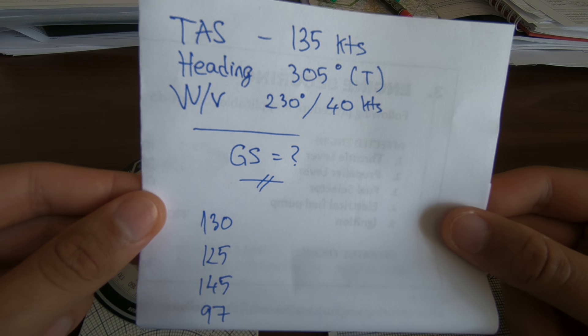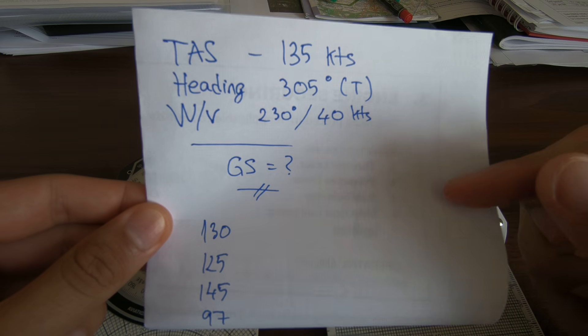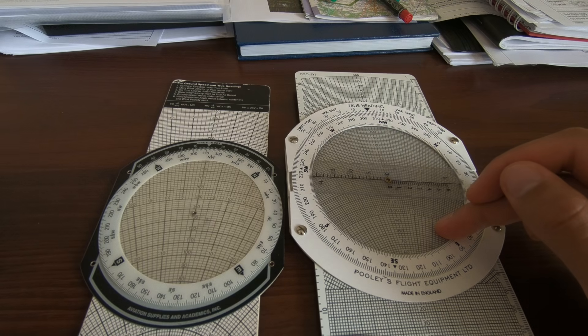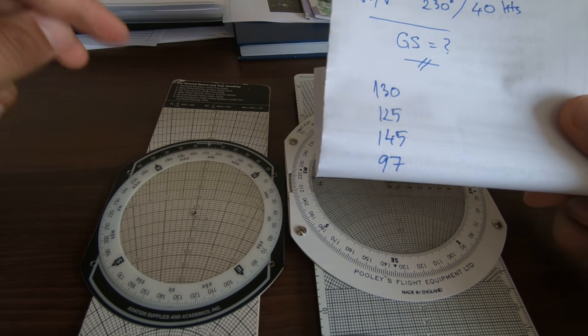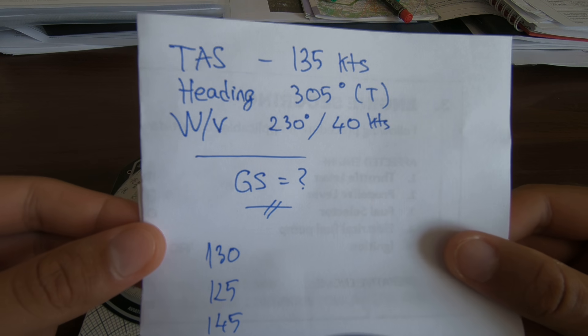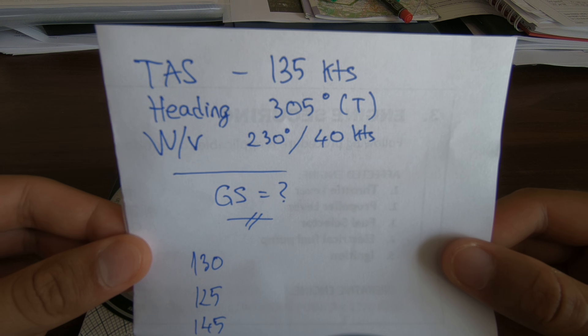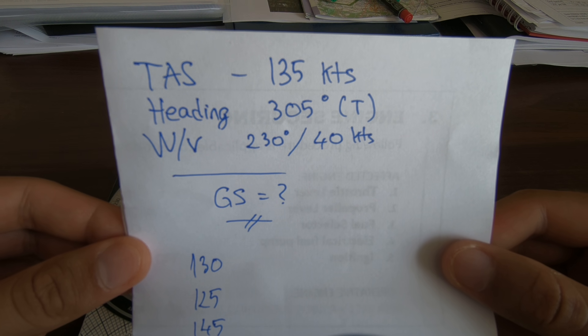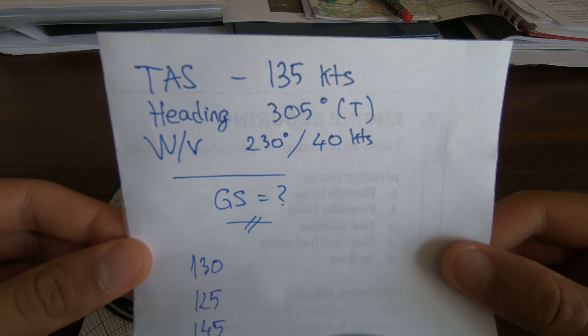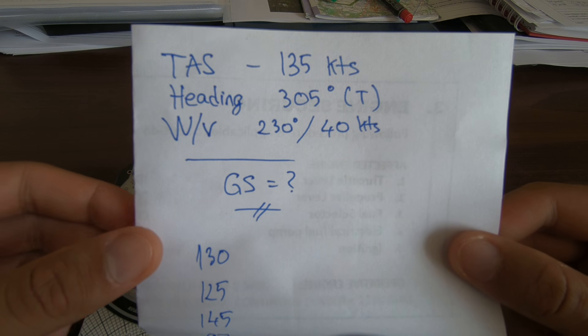Hello everybody, welcome back to the channel. Today we're going to solve this general navigation problem using a CRP5 and an E6B. So let's start. The true airspeed is 135 knots and the heading is 305 degrees. The wind is 230 and the speed of the wind is 40 knots. What is the ground speed?